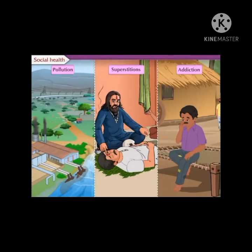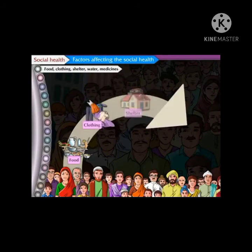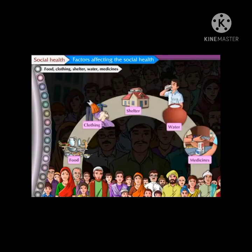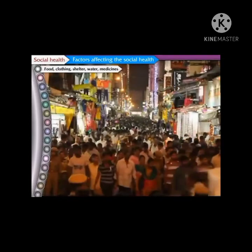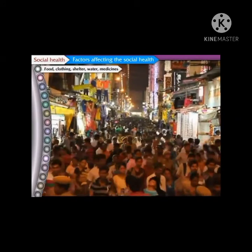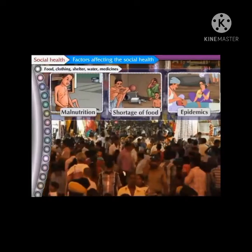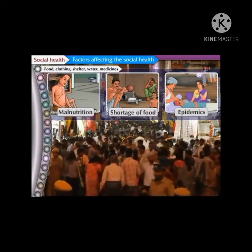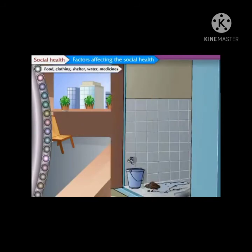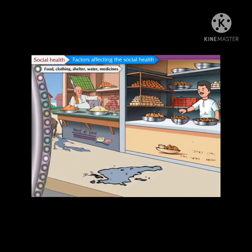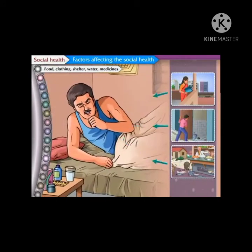Let us study in detail the factors affecting social health. Food, clothing, shelter, water, and medicines are some of the basic needs of man. To maintain good social health, it is essential that these needs are satisfied. However, due to increasing population, satisfying these basic needs has become difficult. As a result, problems like malnutrition, shortage of food, and epidemics arise. If residential areas, toilets, and the surroundings are not kept clean, this will lead to further deterioration of social health.